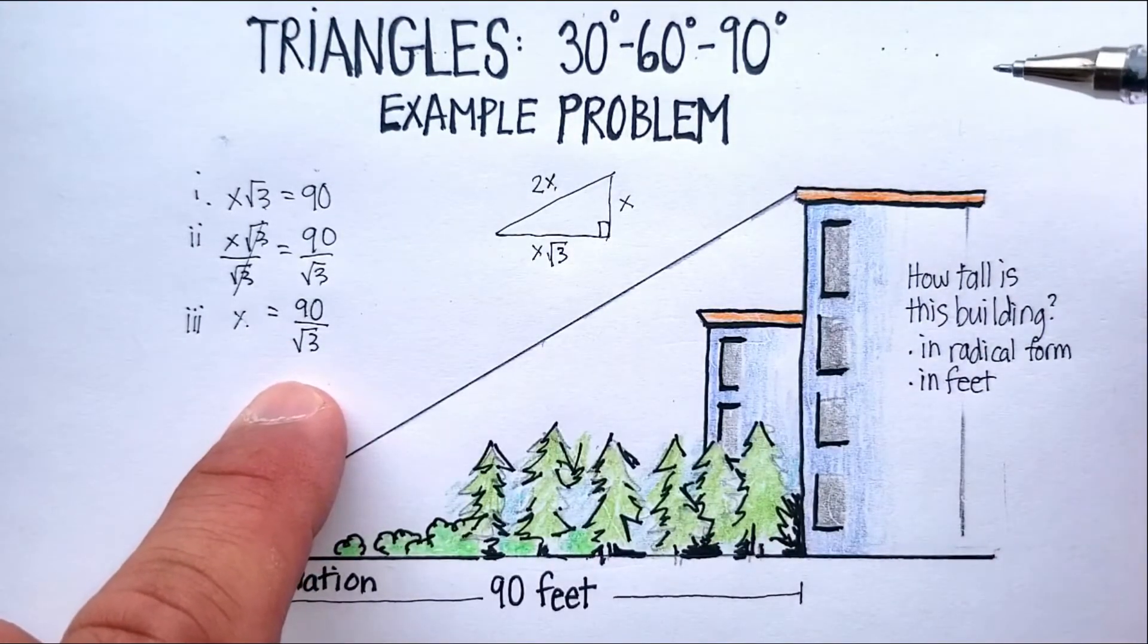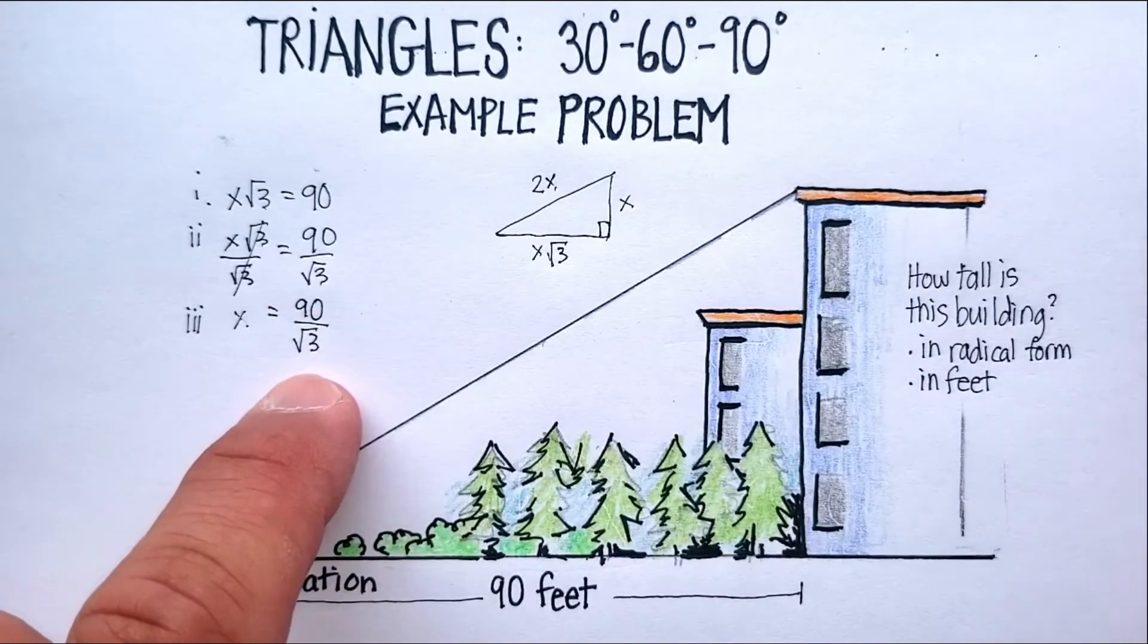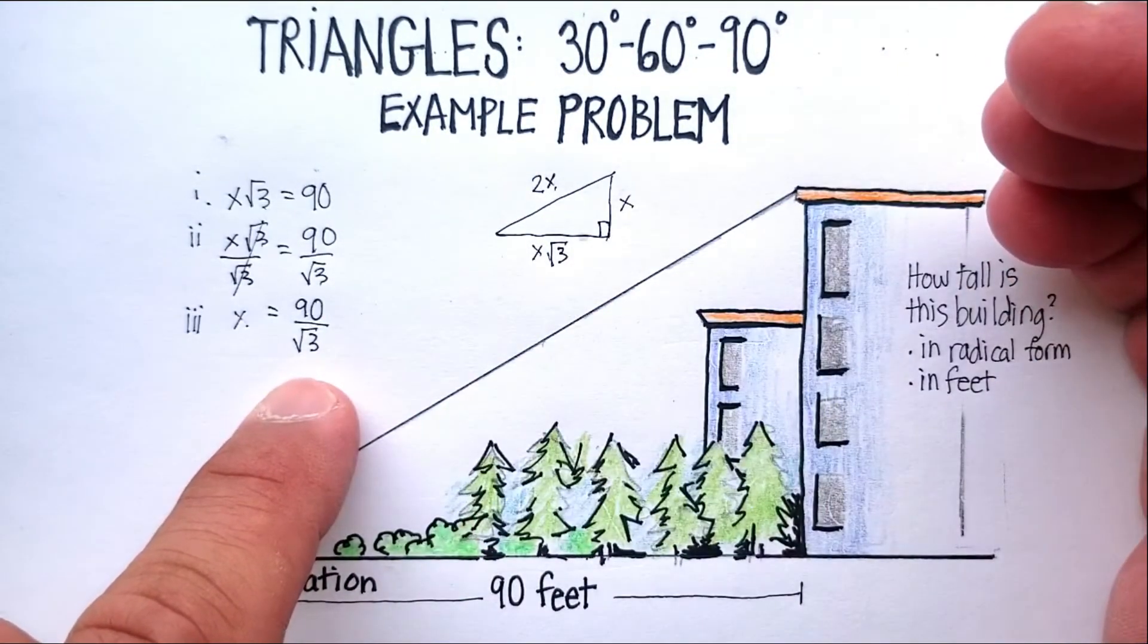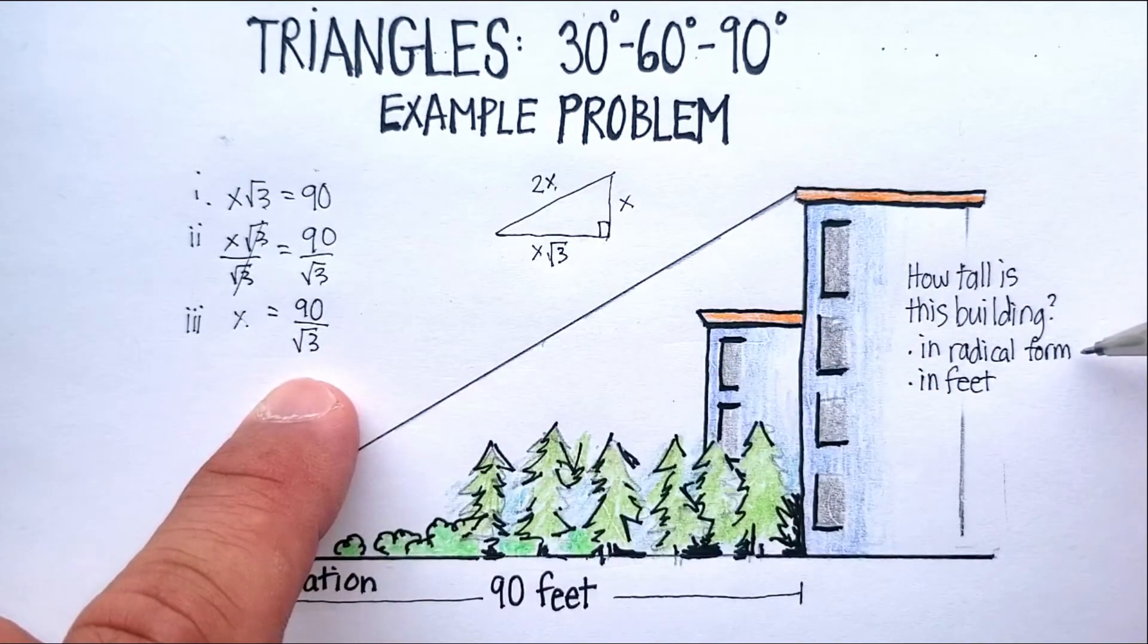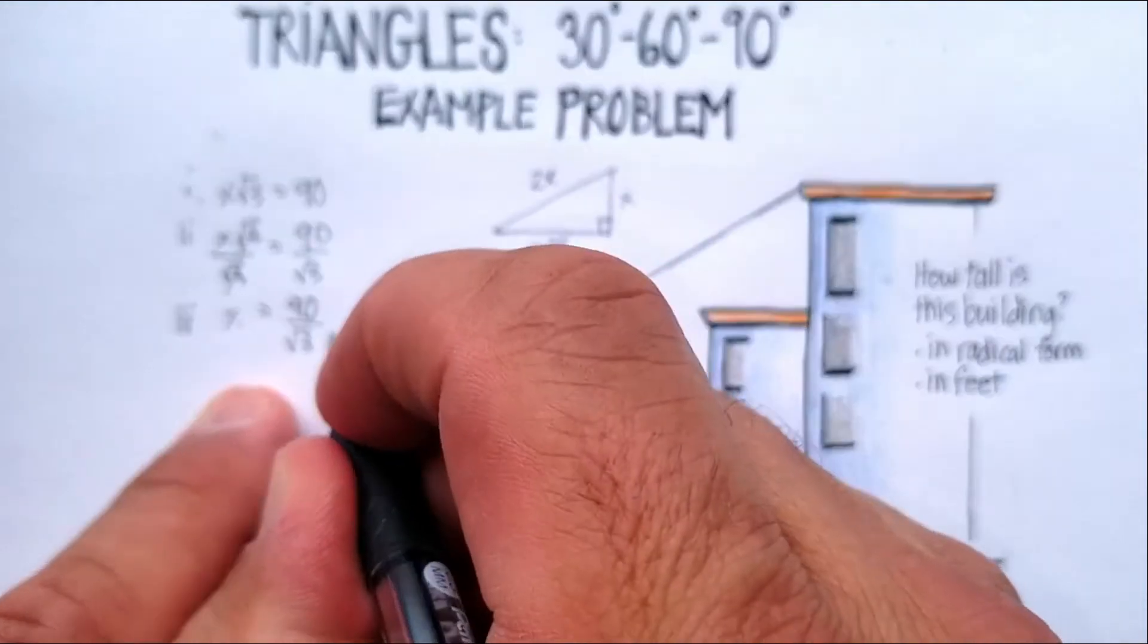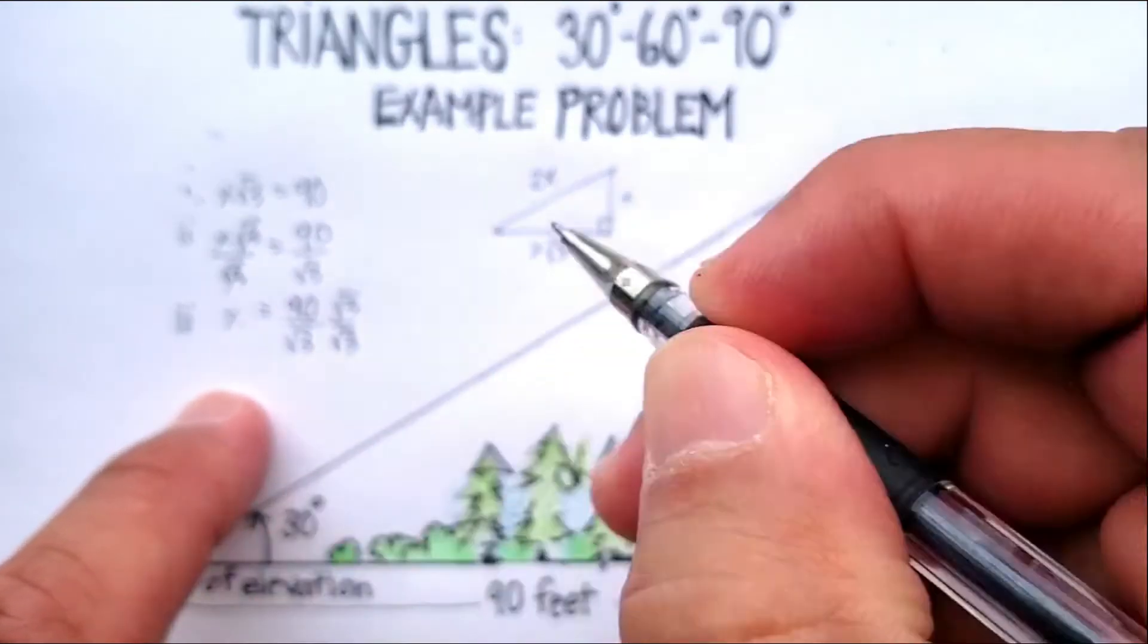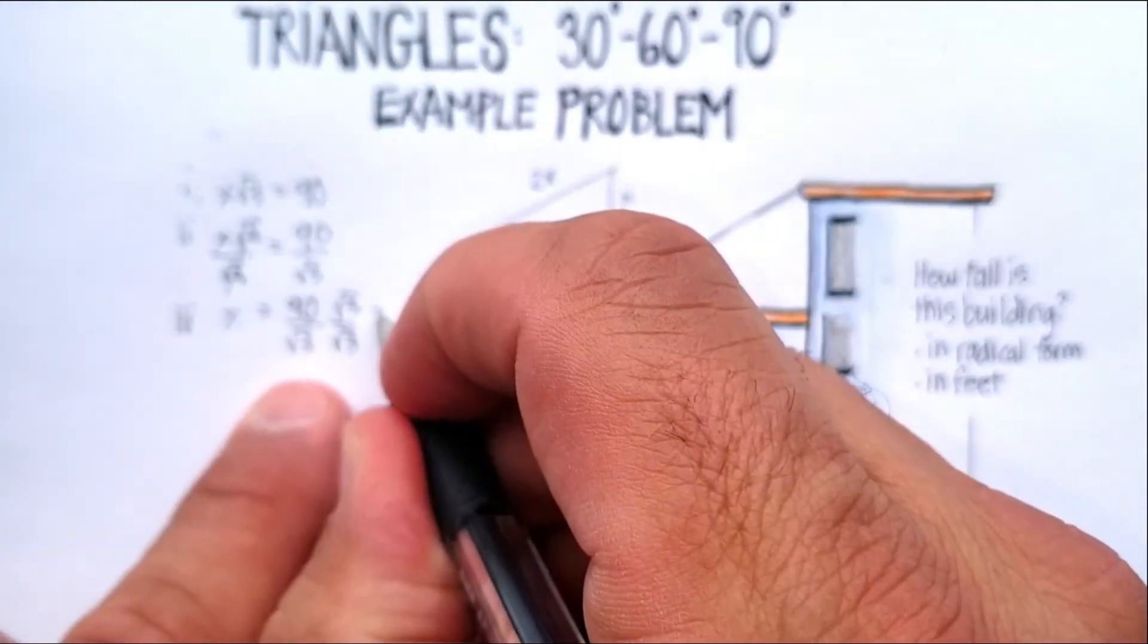Now, remember I said at the beginning of the problem, very few people say that the height of a building is 90 divided by √3 or something similar to that. So we're going to convert 90√3 to feet. But before we do that, we want to know what the radical form is that's a little bit more acceptable. And very rarely do people have a radical in the denominator. So let's do that first. Let's multiply by √3 over √3. And what that does is called rationalizing the denominator.